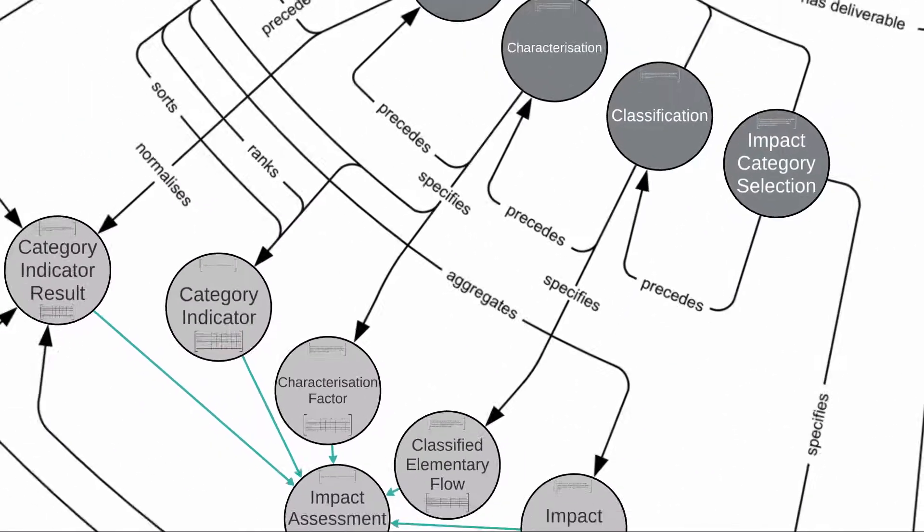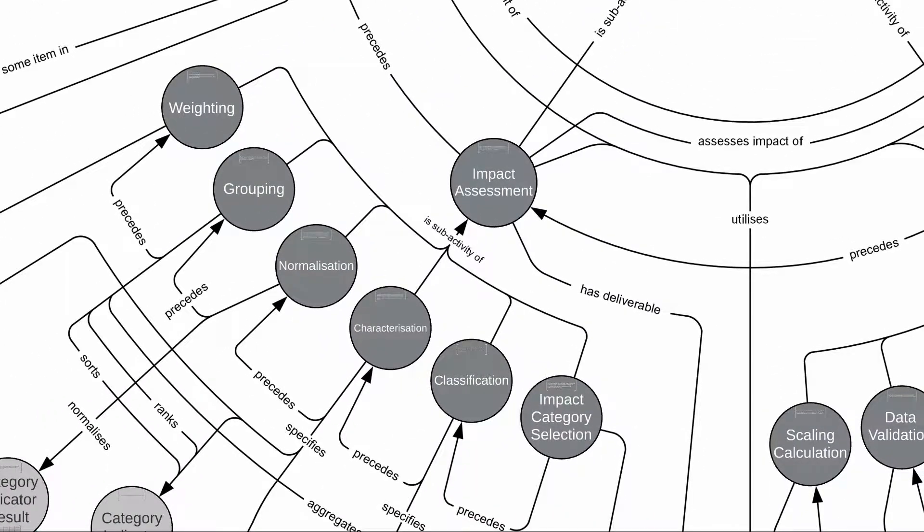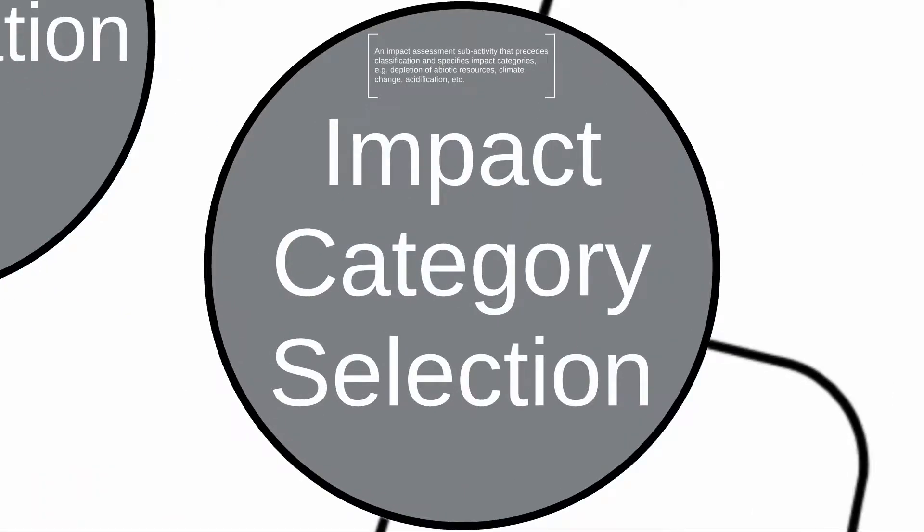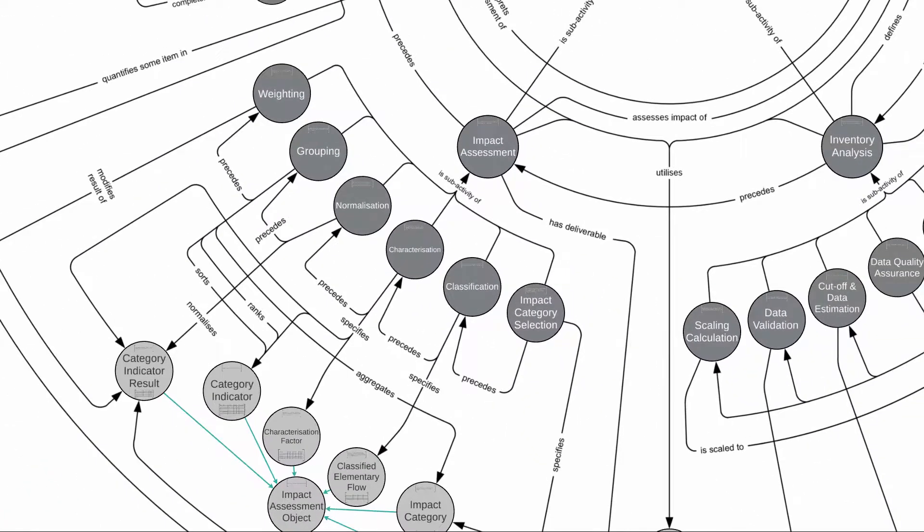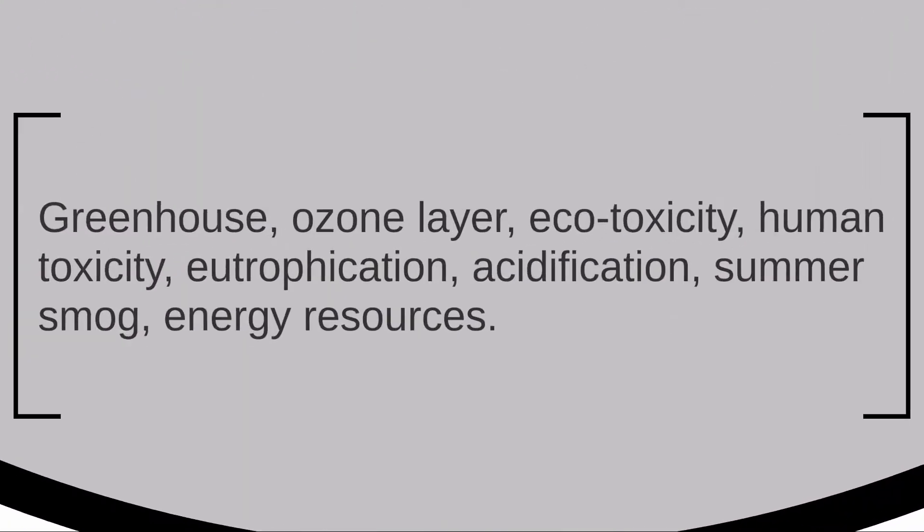And thirdly, we also need a number of sub-activities of impact assessment to come to life. We'll start off with impact category selection, which is basically the process of choosing the impact categories to consider in this study. You would recognize some of these examples of impact categories, like greenhouse, ozone layer, ecotoxicity, acidification, and so on. These are the ones we will consider when evaluating the environmental performance of our TEFL kettle.